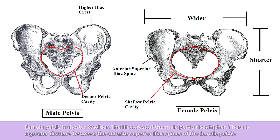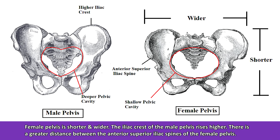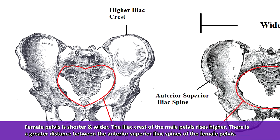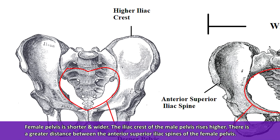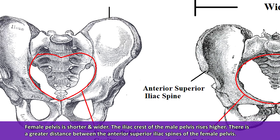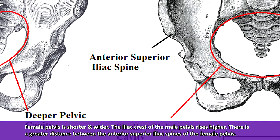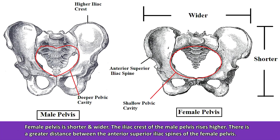First, you'll notice that the female pelvis is shorter and wider than the male pelvis. As a result, the iliac crest of the male pelvis rises higher than the iliac crest of the female pelvis, and there's a greater distance between the anterior superior iliac spines of the female pelvis when compared to the male pelvis. And this usually gives women a slightly curvier appearance in that hip region as compared to the average male.